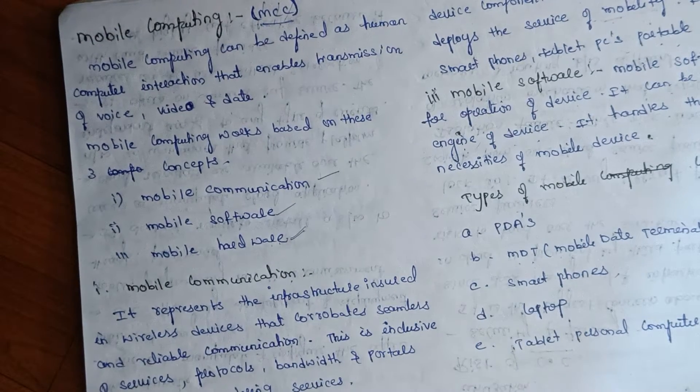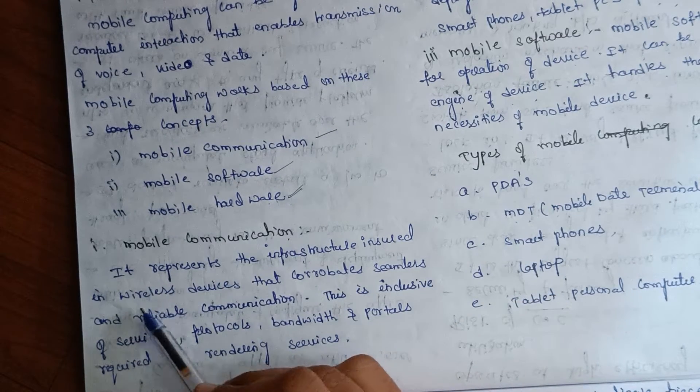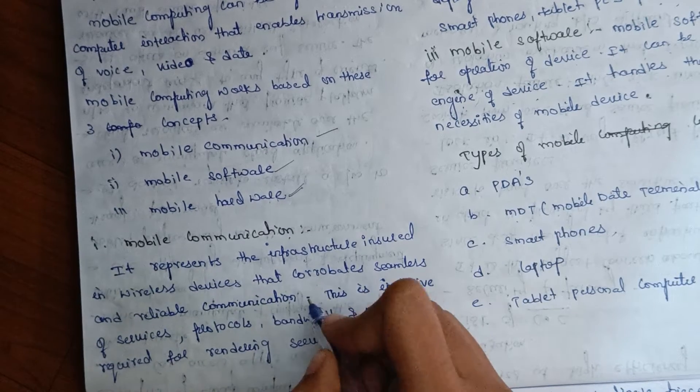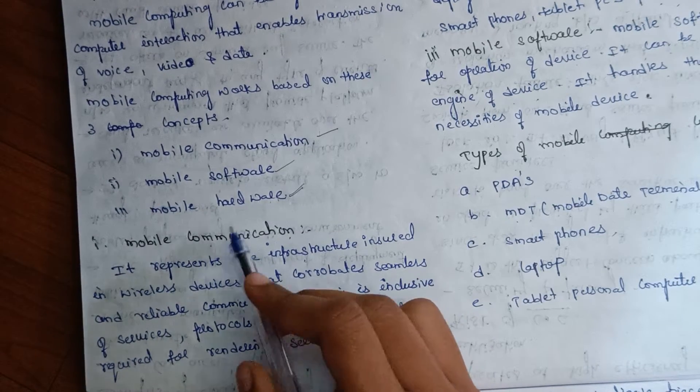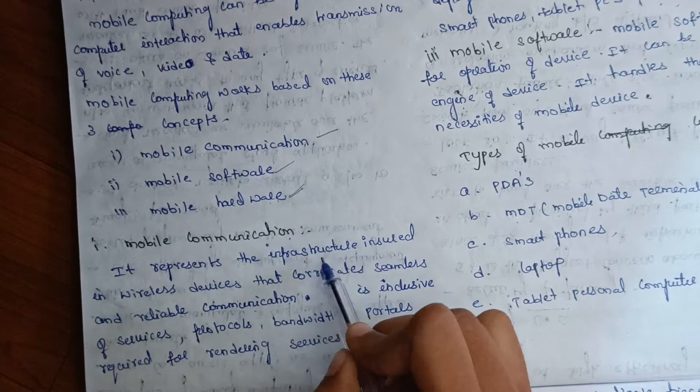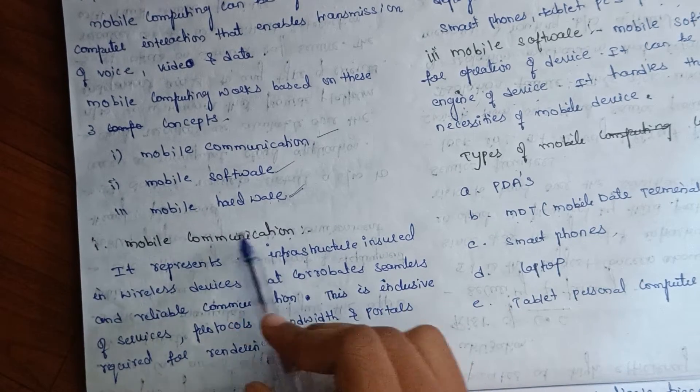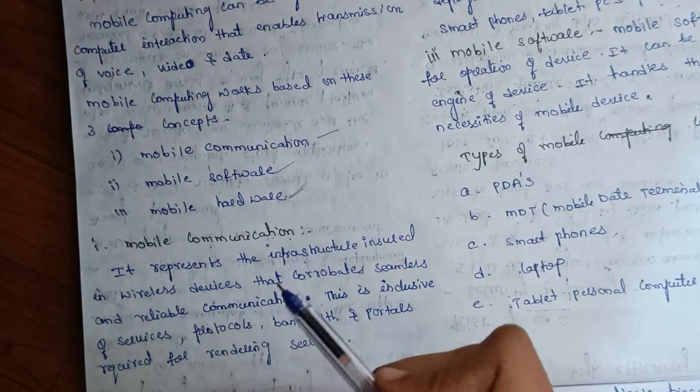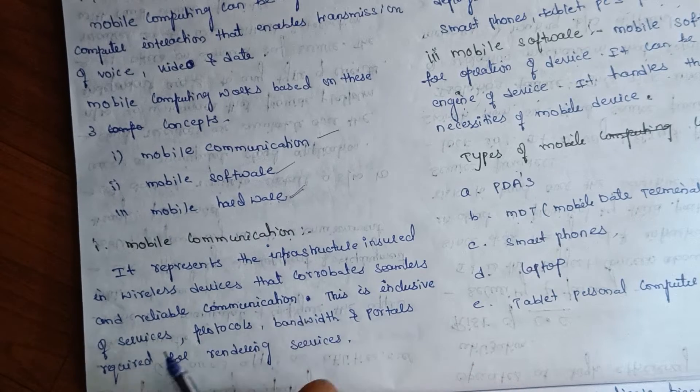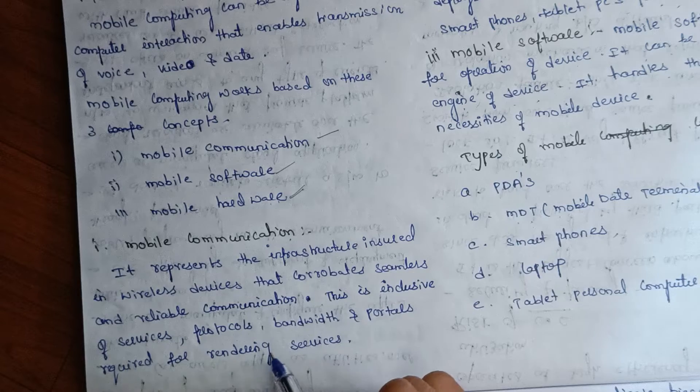Mobile communication represents the infrastructure in wireless devices that corroborates seamless and reliable communication. This includes protocols, bandwidth, and other requirements for rendering services. These services are important in mobile communication systems.